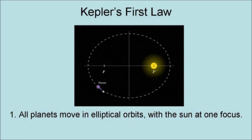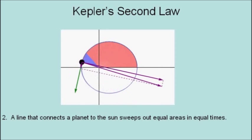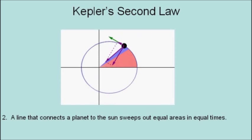This was actually a departure from the original idea that planets moved in circular orbits. Kepler's second law is that a line that connects a planet to the sun sweeps out equal areas in equal times. That is, when the planet is closer to the sun, it moves faster, and when it is farther away from the sun, it moves slower.